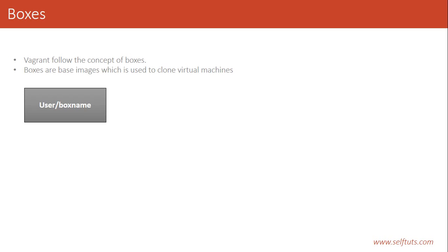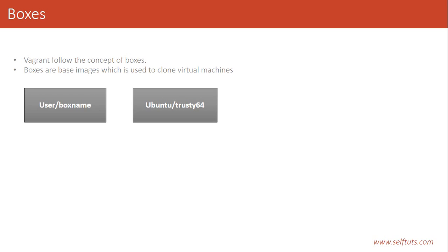In Vagrant, a box has two things mainly: one is the username and one is the name of the box. Every box is designated or related to some user - the user that has created it. It may be an individual person or it may be a company. So every box has a username and a box name. Let's see some very famous boxes present in Vagrant.